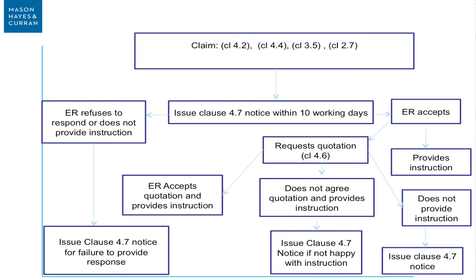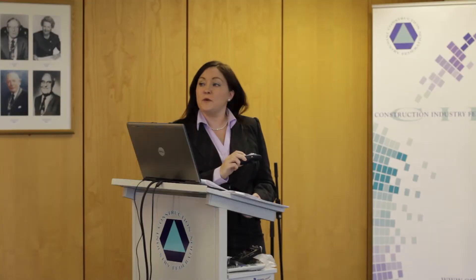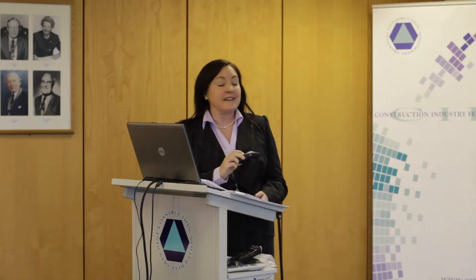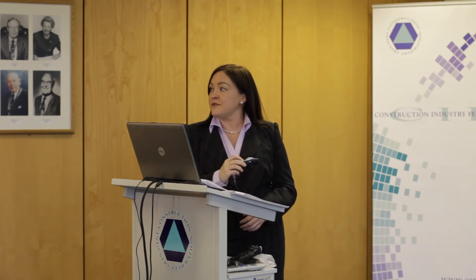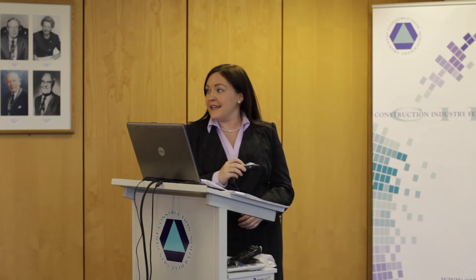What people don't appreciate is you can't just say 'he didn't do anything or he didn't give it to me.' No, that's a claim - issue a 4.7 notice. This is simply another letter within another 10 days. If you asked for an instruction within 7 days and 7 days pass without getting it, then within 10 days of that write another letter. Because as I said earlier, it's a compensation event if you've asked for an instruction and haven't got it. Be clever, write the letter.